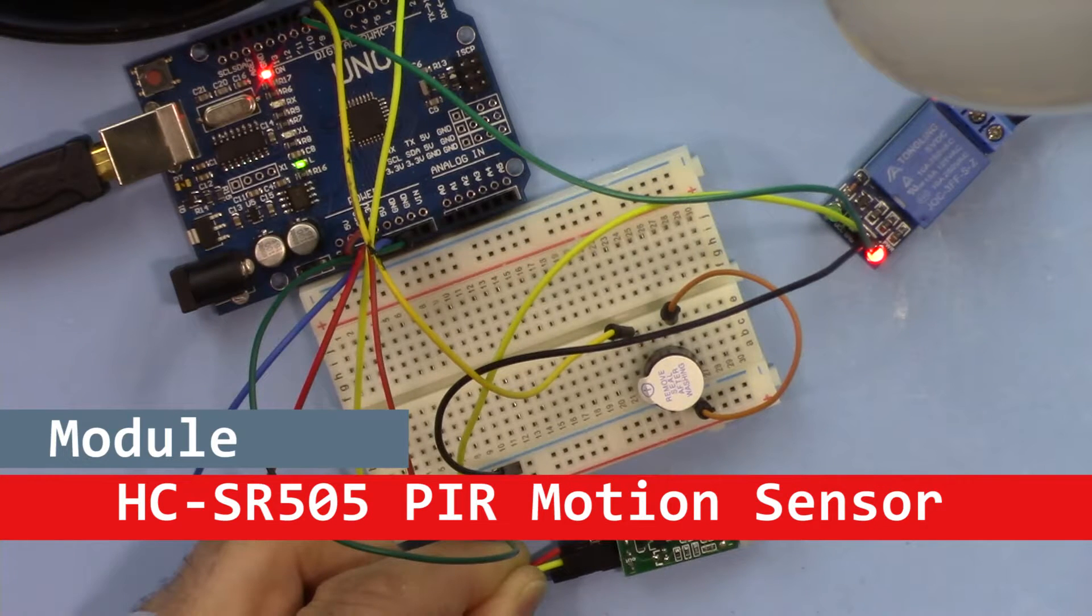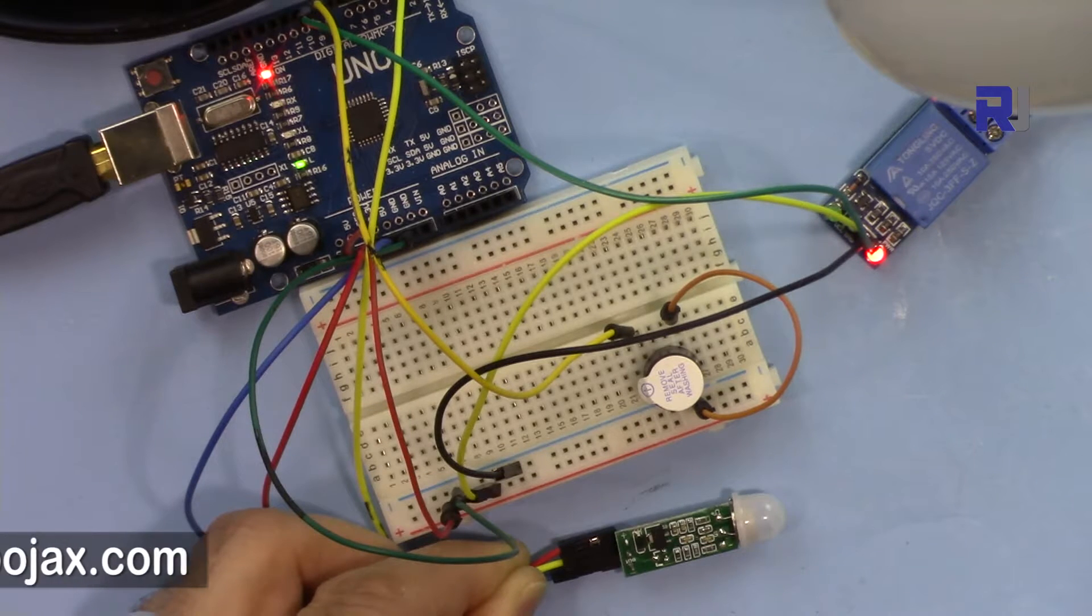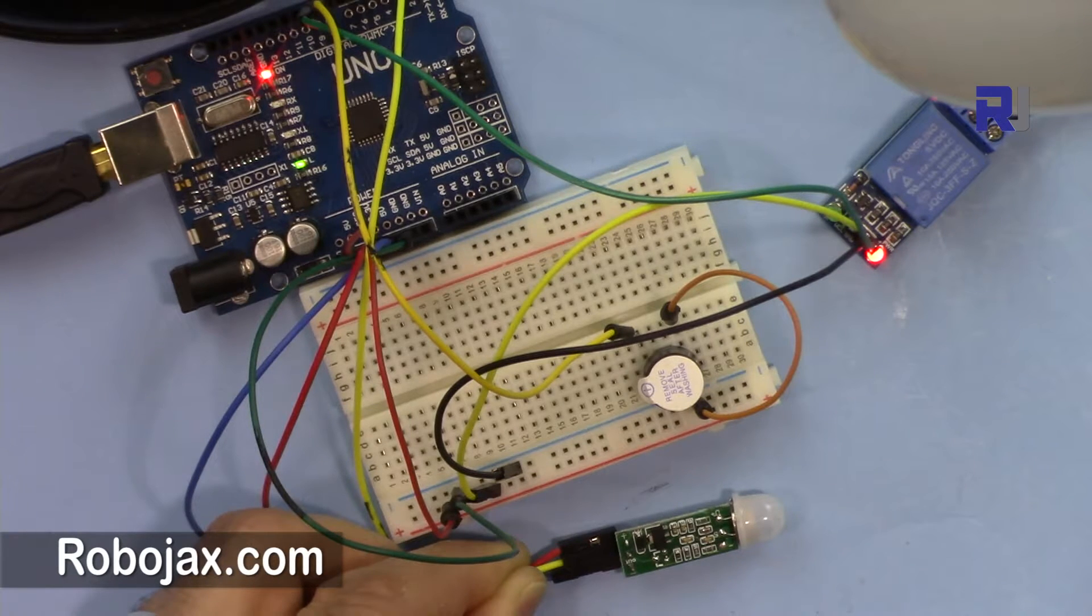Hi, welcome to another video tutorial from Robojax. In this video we are going to see how we can use this HC-SR505 motion sensor to control a light or detect a motion and turn on the buzzer, for example.